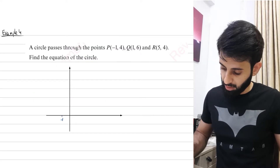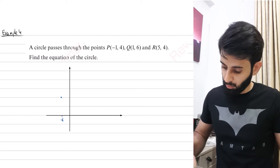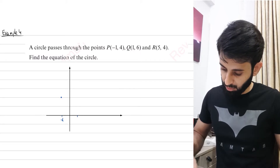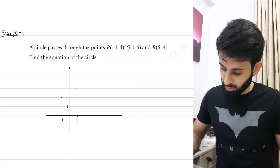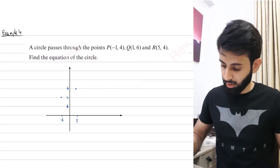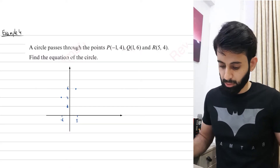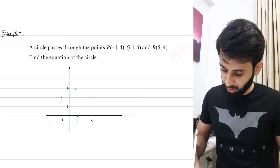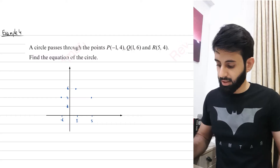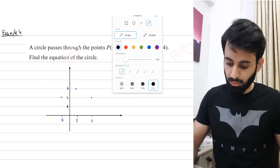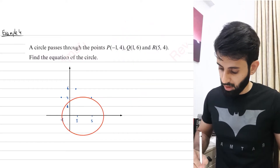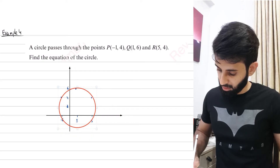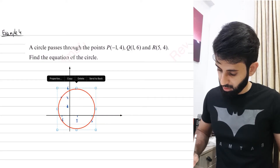So (-1, 4) is somewhere over here, (1, 6) is somewhere over here, and (5, 4) is somewhere over here. We have a circle passing through these three points and we have to find its equation. There's no need to concentrate too much on the aesthetics.